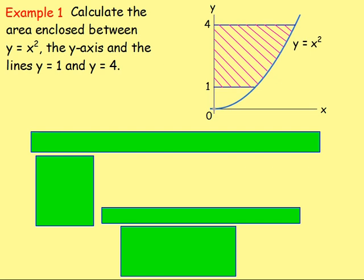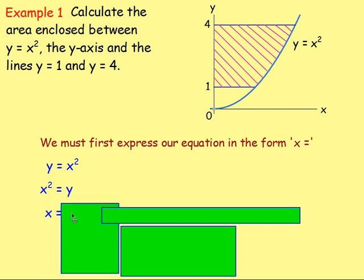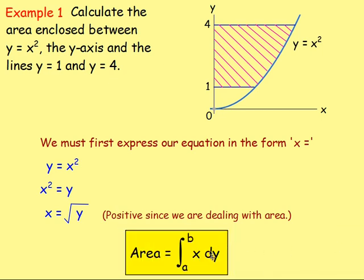Example 1: calculate the area enclosed between y equals x squared, the y-axis, and the lines y equals 1 and y equals 4. First, because we're integrating between the curve and the y-axis, we need to express our equation in the form x equals — we need to write x in terms of y. Starting with y equals x squared, we rearrange. We just take the square root. You could have positive or negative, but since it's an area we're dealing with, we just take the positive. So x equals the square root of y. Now we can use our formula: area equals the integral of x with respect to y, between a and b.